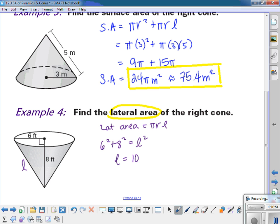So my lateral area is equal to 10. And so now I just have to do pi r L. So I have pi times my radius of 6 and my lateral slant height of 10. And so the lateral area would equal 60 pi, or approximately 188.5 feet squared.